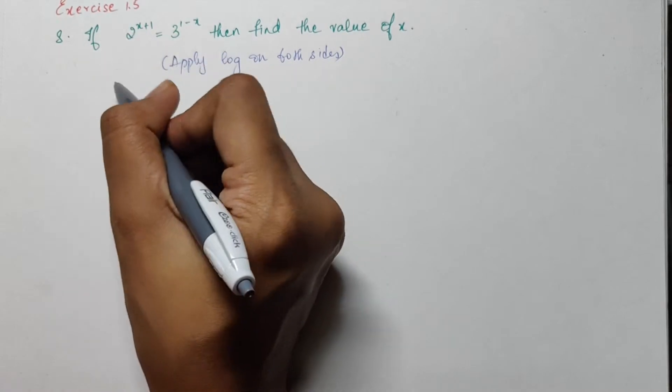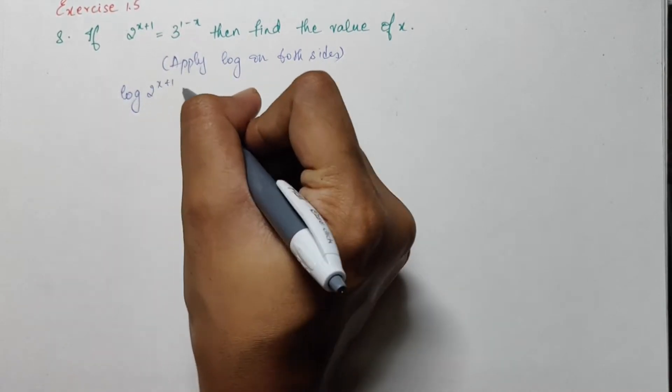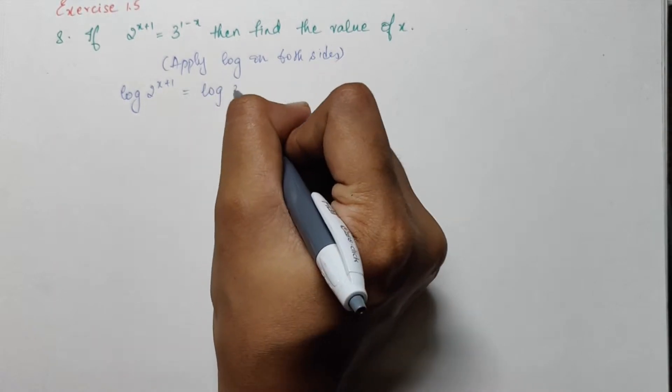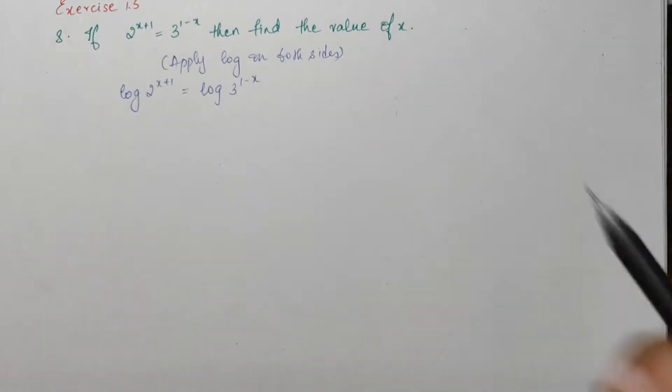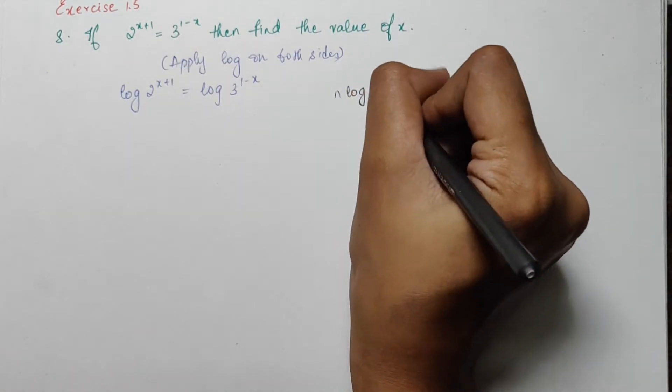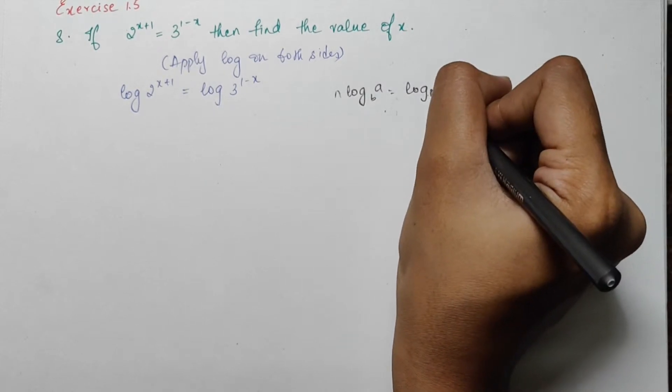So I would have log 2 power x plus 1 is equal to log of 3 power 1 minus x. Now using this formula n into log a to base b is equal to log a power n to base b.